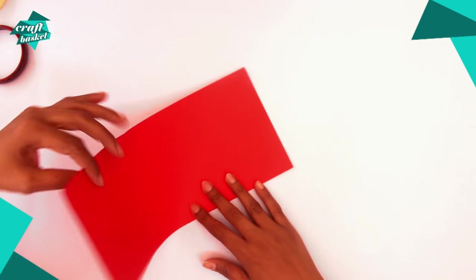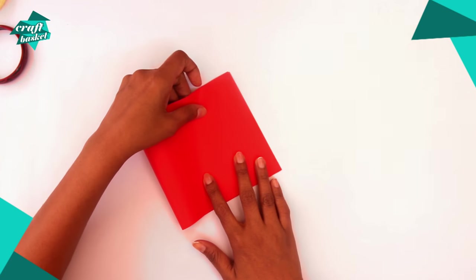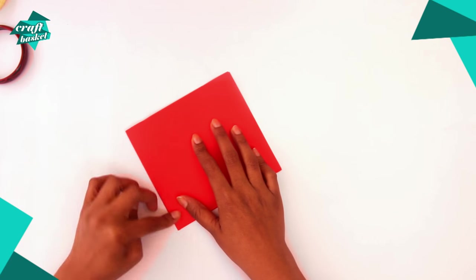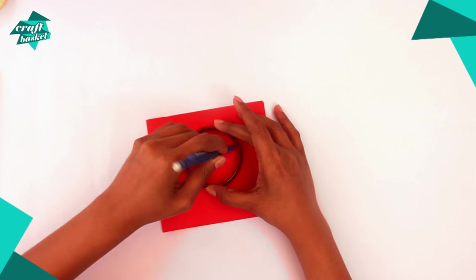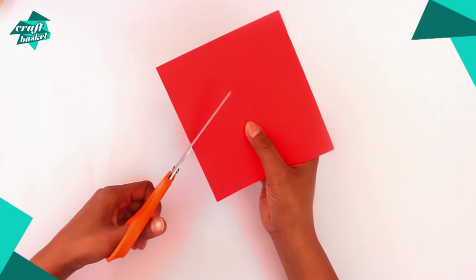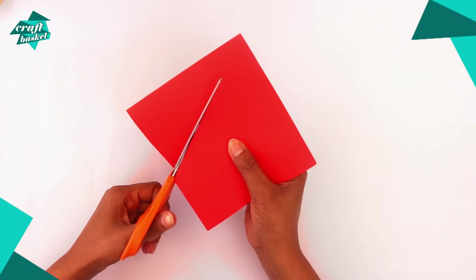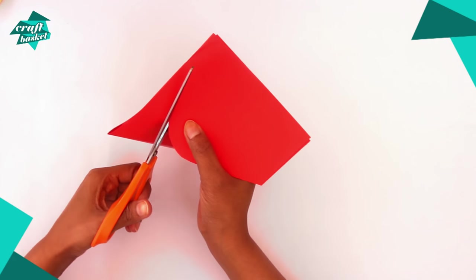We'll start off by folding the red paper in half. Now with the help of the bangle, draw a circle in the middle of the paper. Now cut out the circle and you'll have two red circles which will look like this.